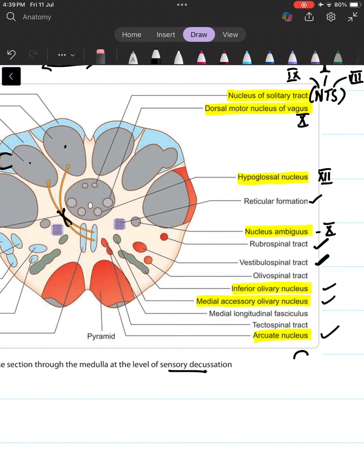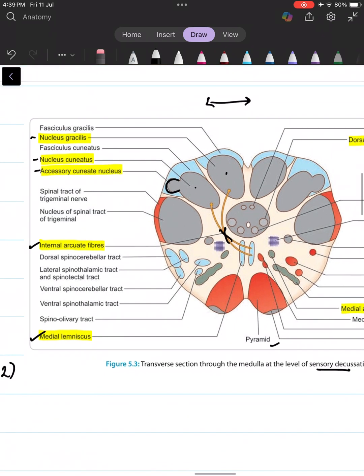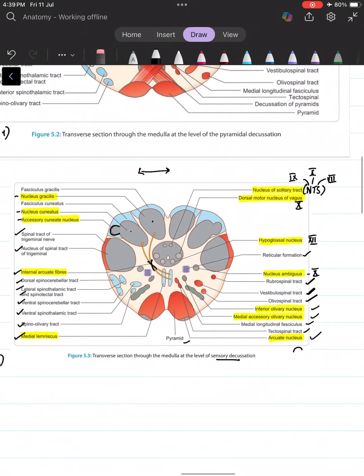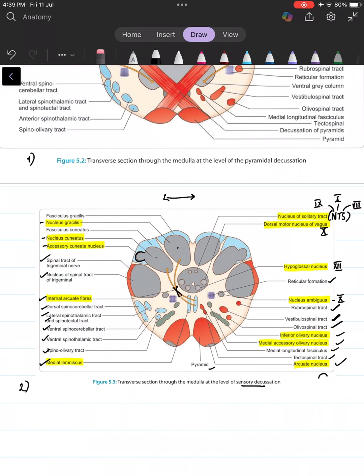The rubrospinal, vestibulospinal, olivospinal, tectospinal tracts, the medial longitudinal fasciculus and the pyramids. All these are descending tracts whereas spinocerebellar, spinothalamic, spinotectal and spinolivary tracts are ascending, and of course spinal tract and spinal nucleus of trigeminal nerve. That is your TS of medulla at the level of sensory decussation.